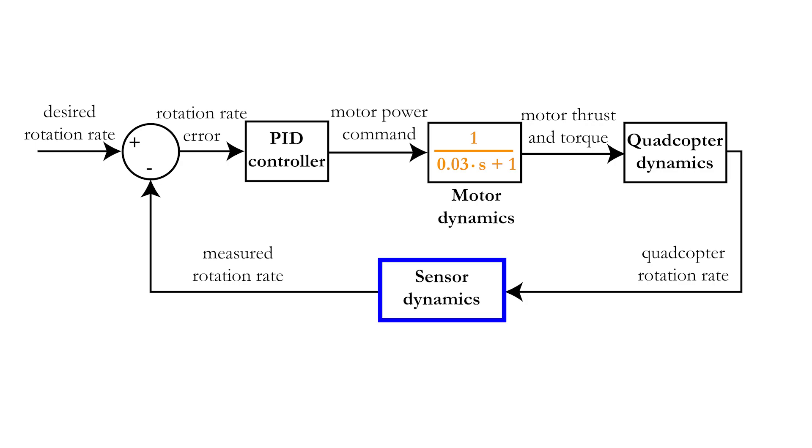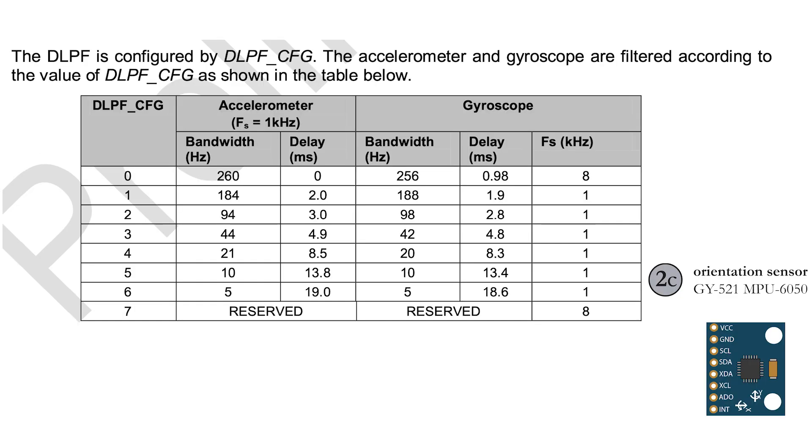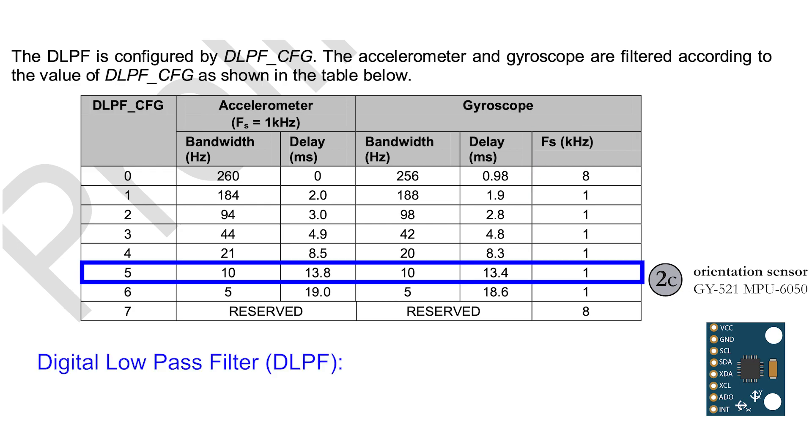We will continue with the sensor dynamics, which will be very similar to the motor dynamics. In the datasheet of our MPU6050 gyroscope and accelerometer, we see that the sampling frequency can be up to 8 kHz. However, we used a digital low-pass filter to eliminate unwanted noise, with a cutoff frequency of 10 Hz.